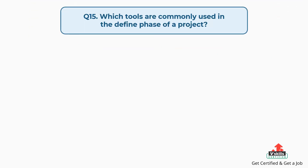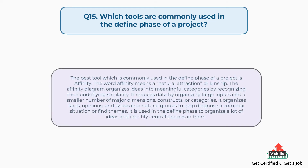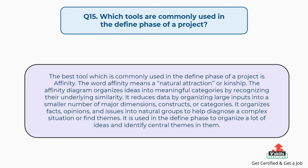Question number fifteen: Which tools are commonly used in the define phase of a project? The best tool commonly used in the define phase is the affinity diagram. The affinity diagram organizes ideas into meaningful categories by recognizing their underlying similarity. It reduces data by organizing large inputs into a smaller number of major dimensions, constructs, or categories. It organizes facts, opinions, and issues into natural groups to help diagnose a complex situation or find themes. It is used in the define phase to organize a lot of ideas and identify central themes in them.